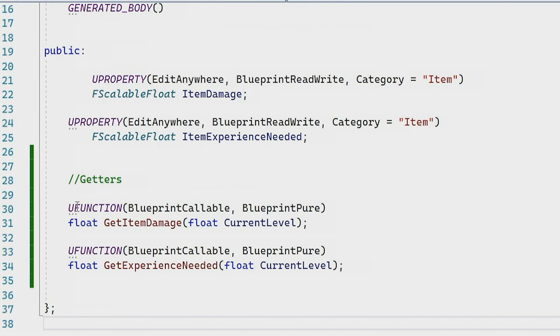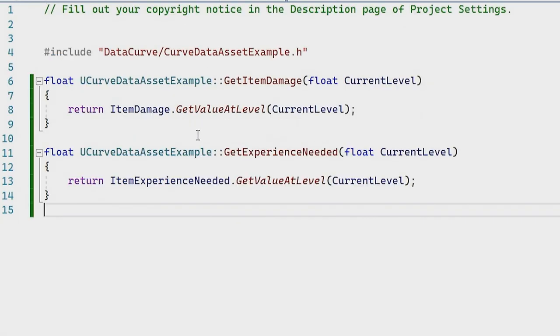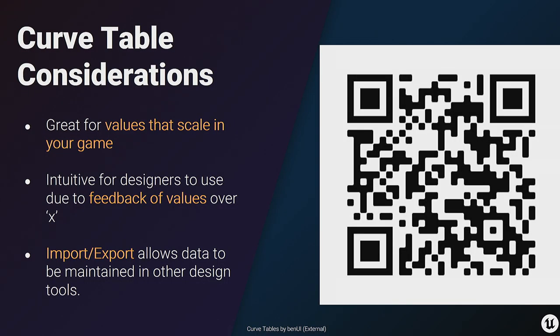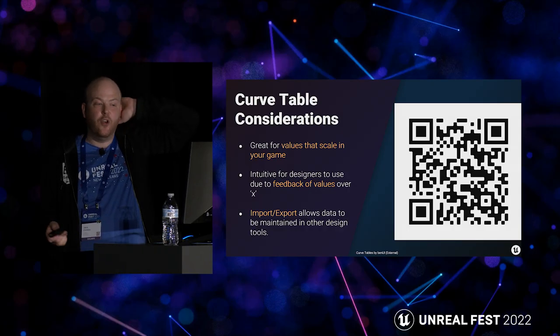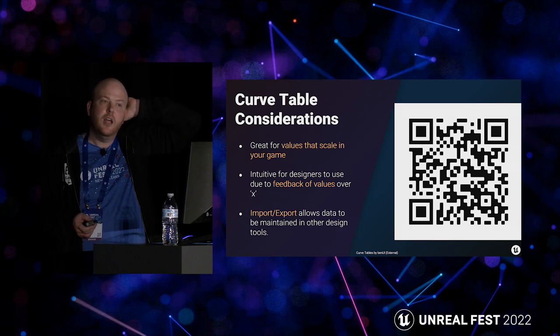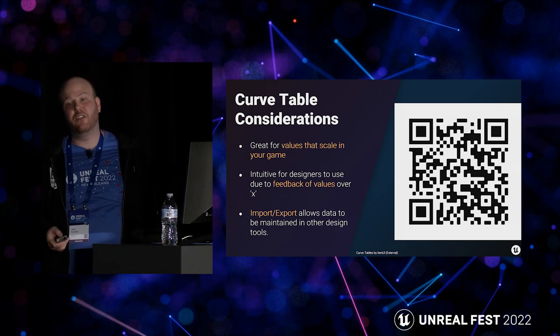Curve data tables work really well with scalable floats — a type that allows the combination of a float and a data curve row to both scale and preview the output. This is great when you want consistent scaling of a curve in a project but with per-asset differences. The float value multiplies against the curve data and provides a preview slider, so you can slide that up and down and see the output change. Accessing information is really simple — just provide the level or x value of your curve.